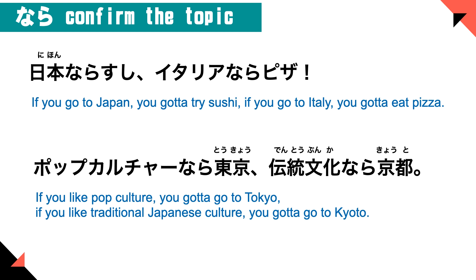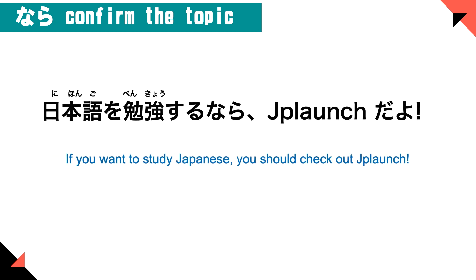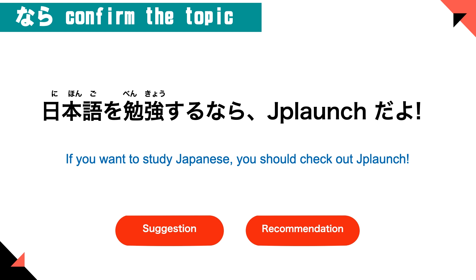These phrases can be used in advertisements — you confirm the topic and then make a recommendation. For example: 'Nihongo wo benkyou suru nara JP Ranch da yo.' — If you want to study Japanese, you should check out JP Ranch. So nara can be used as a suggestion or recommendation.